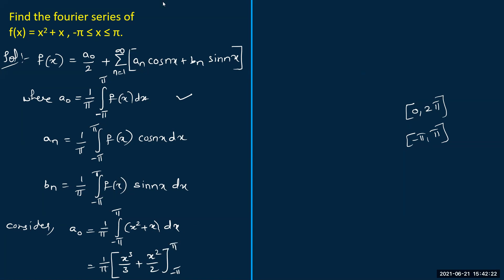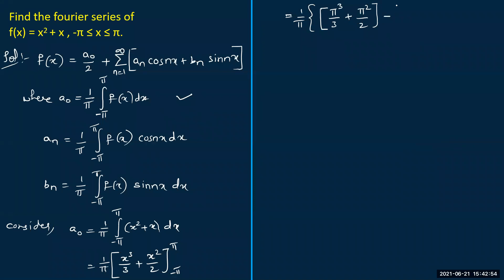We need to substitute the limits — first the upper limit, then subtract the lower limit. So it equals (1/π) times: substituting upper limit π gives π³/3 + π²/2; minus substituting lower limit -π gives (-π)³/3 + (-π)²/2, which is -π³/3 + π²/2. I'm using curly braces to separate upper and lower limit values to avoid confusion in simplification.